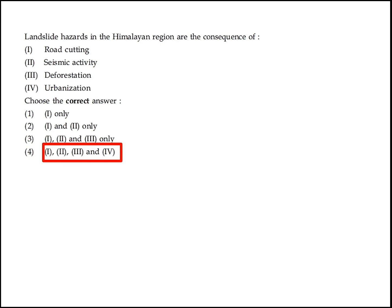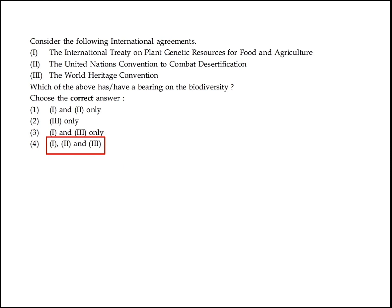Landslide hazards in the Himalayan region are consequences of road cutting, seismic activity, deforestation, and urbanization. Option 4 — 1, 2, 3, and 4 — is the right answer. Considering international agreements — the International Treaty on Plant Genetic Resources for Food and Agriculture, the United Nations Convention to Combat Desertification, and the World Heritage Convention — which have a bearing on biodiversity? Option 4 — 1, 2, and 3 — is the right answer.